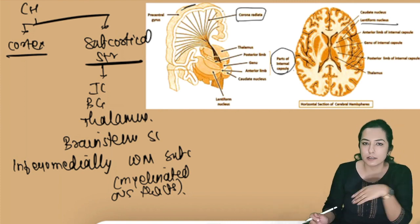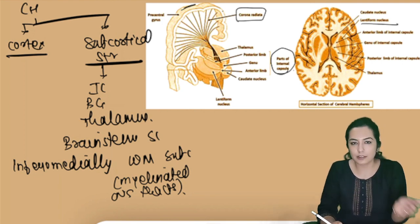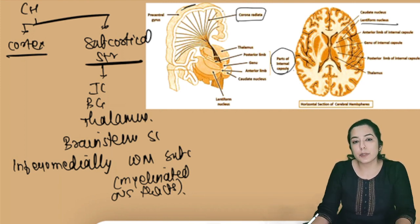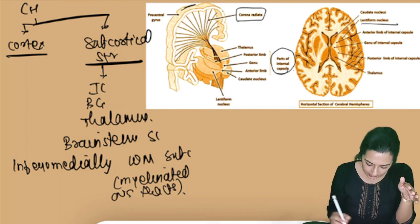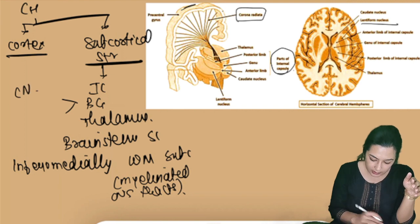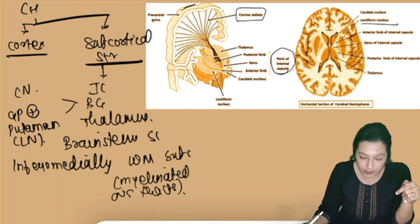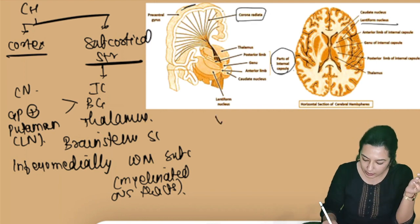Between the internal capsule and the cerebral cortex, the corona radiata is the connecting element — just a continuation of the same fibers. As the ascending and descending fibers pass through it, the internal capsule divides the basal ganglia into two parts: medially the caudate nucleus, and laterally the globus pallidus plus putamen, together known as the lentiform nucleus.